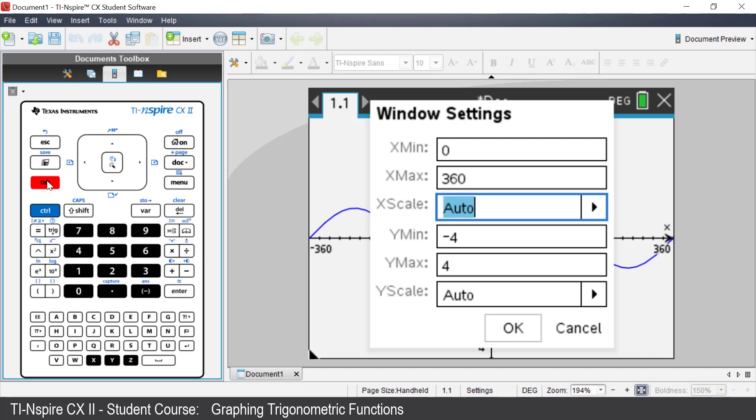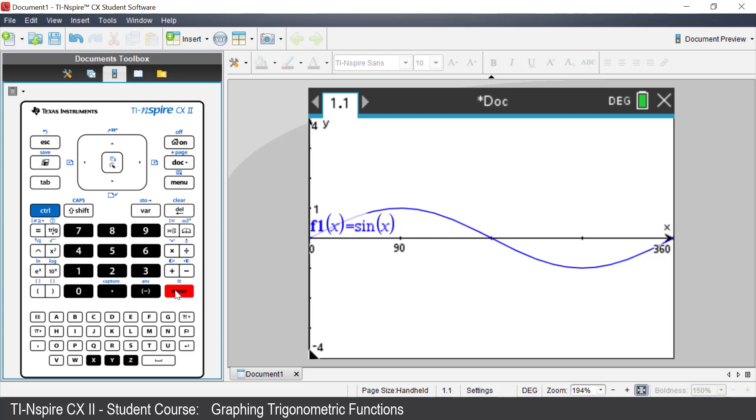0 for X minimum. An X scale of 90. A Y scale of 1. Tab to OK and press Enter.